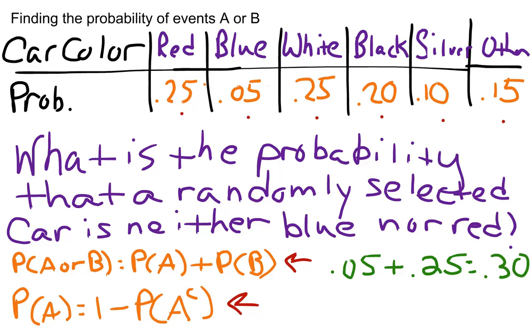Now, they don't want to know the probability of seeing a red or blue car. They want to know the probability that the car is neither blue nor red. So now we take this information and apply it to our complement rule: 1 minus the probability of blue or red. That gives us 1 minus 30%, which equals 70%.